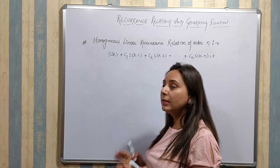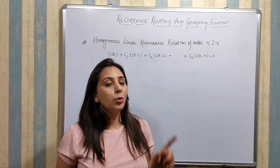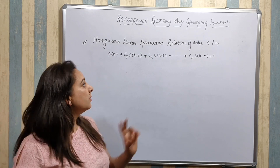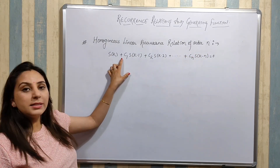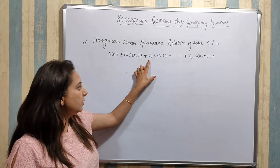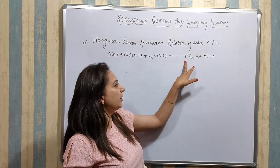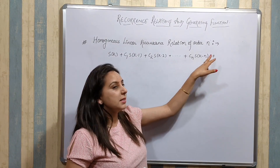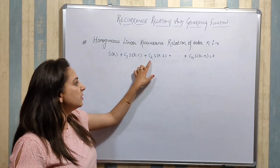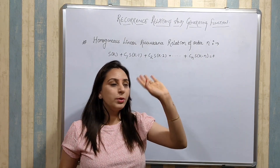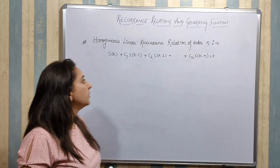A homogeneous linear recurrence relation of order N is given by: S(K) plus C1·S(K-1) plus C2·S(K-2) plus ... plus Cn·S(K-N) equals 0, where C1, C2, C3, ..., Cn are constants.